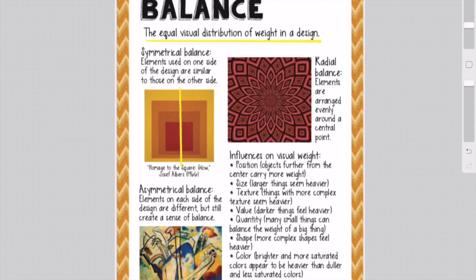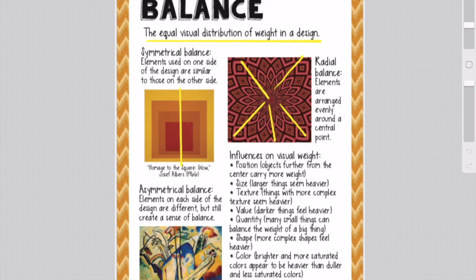Then we have radial balance. Radial balance is a kind of balance that happens when all of the elements radiate from the center of the design. As I draw these lines out from the middle, you can see that these shapes come out from the middle — they radiate outwards, like the word radius.